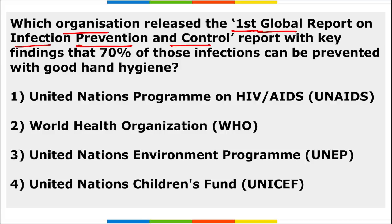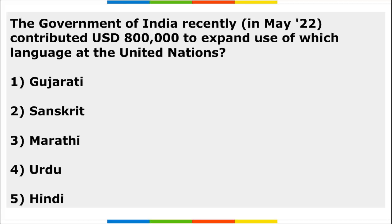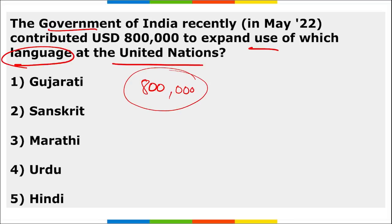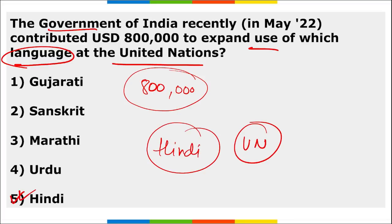The World Health Organization released the first global report on infection prevention and control, stating that 70% of all infections can be prevented with good hand hygiene. The Government of India contributed 800,000 US dollars to expand the use of Hindi at the United Nations.